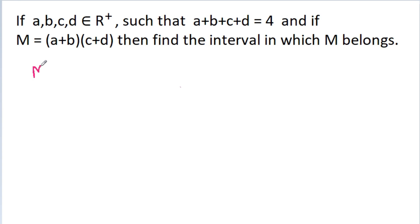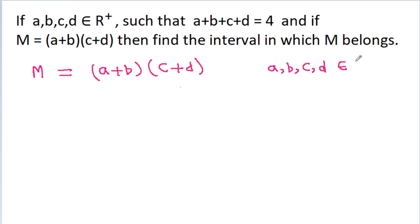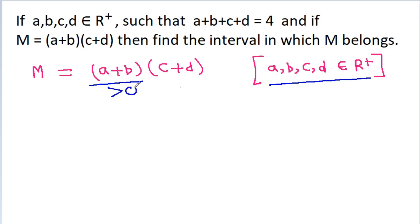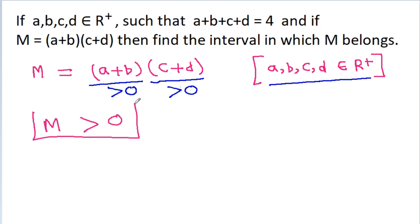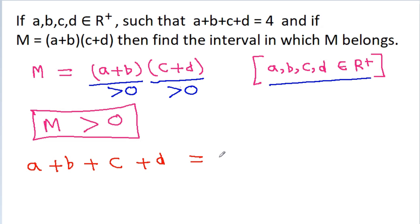So we have m is equal to a plus b times c plus d, and a, b, c, d belong to positive real numbers. Since a, b, c, d are positive, that means a plus b will be positive and c plus d will be positive. So m will be greater than 0. Also, we have given that a plus b plus c plus d is equal to 4.